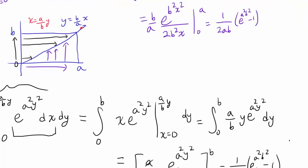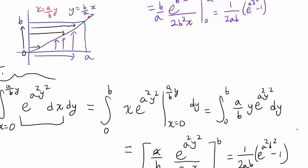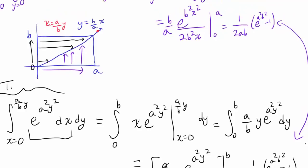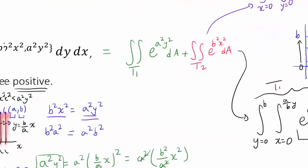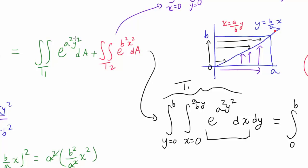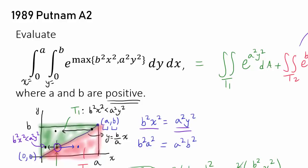So what is our final answer? We add up the two results: 1 over 2ab times (e to the a squared b squared minus 1) from T1, plus the same value from T2. We are adding two equivalent things, so we multiply by 2, giving 1 over ab times (e to the a squared b squared minus 1). You could also see this using the symmetry of T1 and T2 and the symmetry of a and b. That is our final answer.